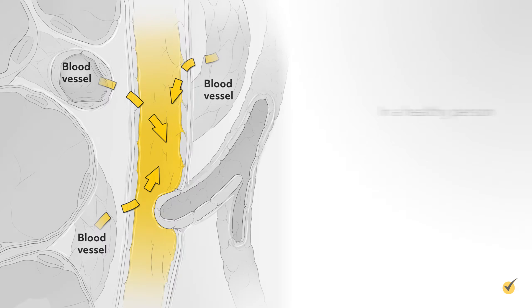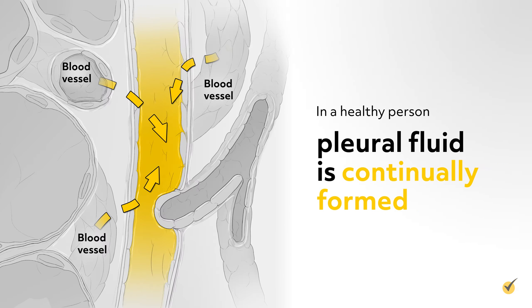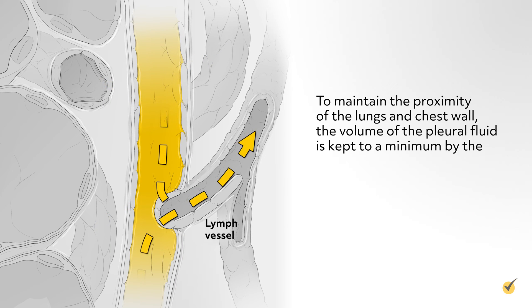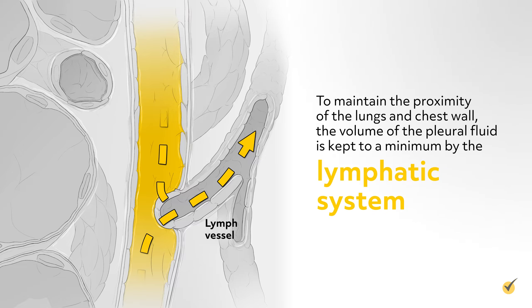In a healthy person, pleural fluid is continually formed. To maintain the proximity of the lungs and chest wall, the volume of pleural fluid is kept to a minimum by the lymphatic system.